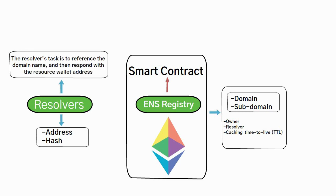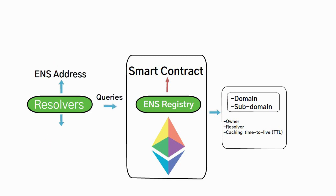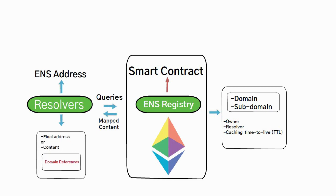With those two components listed, let's map the basic ENS architecture and flow. When resolving an ENS address, you first query the ENS registry for an ENS address. Then the registry answers you with the resolver that should be queried for the mapped content, and the resolver in return points you to the final address or content the domain references.